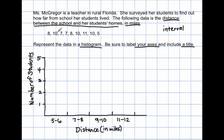We're going to count how many 5-through-6s we see in the actual data set. Once we see a 5 or any number between 5 and 6, we're going to count it. I see one right here — so I'm going to make a bar here for one student who has 5 miles between school and home. This is keeping track of how many times a 5-through-6 appears in the data set, almost like a tally chart but using bars.